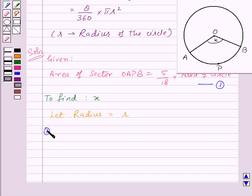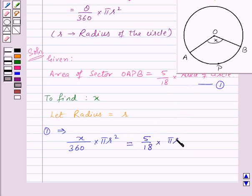So equation 1 implies area of the sector OAPB, which will be given by X upon 360 into pi R squared, as here theta is given by X and radius is R, is equal to 5 by 18 into area of the circle, that is pi R squared.